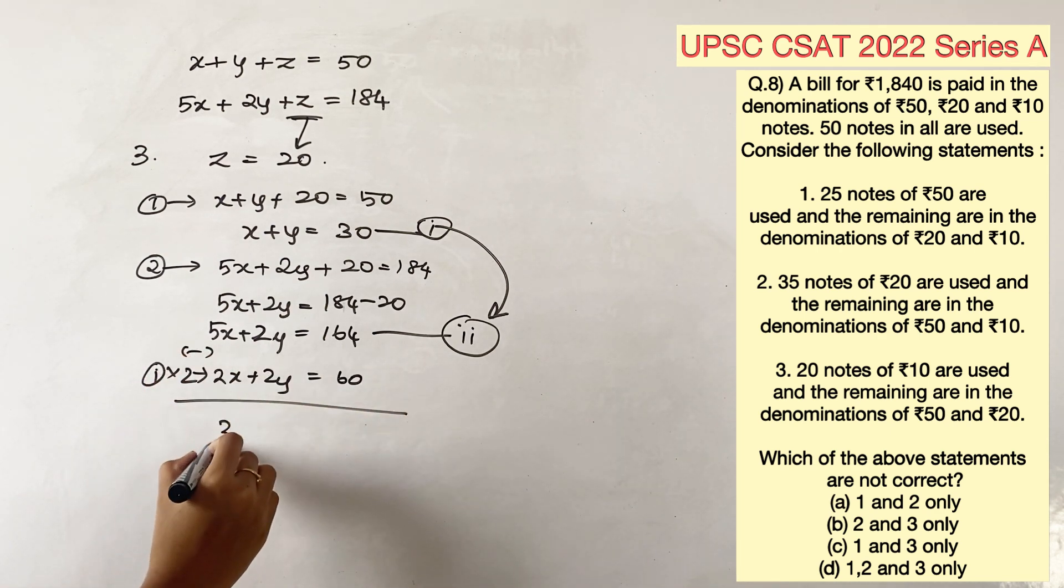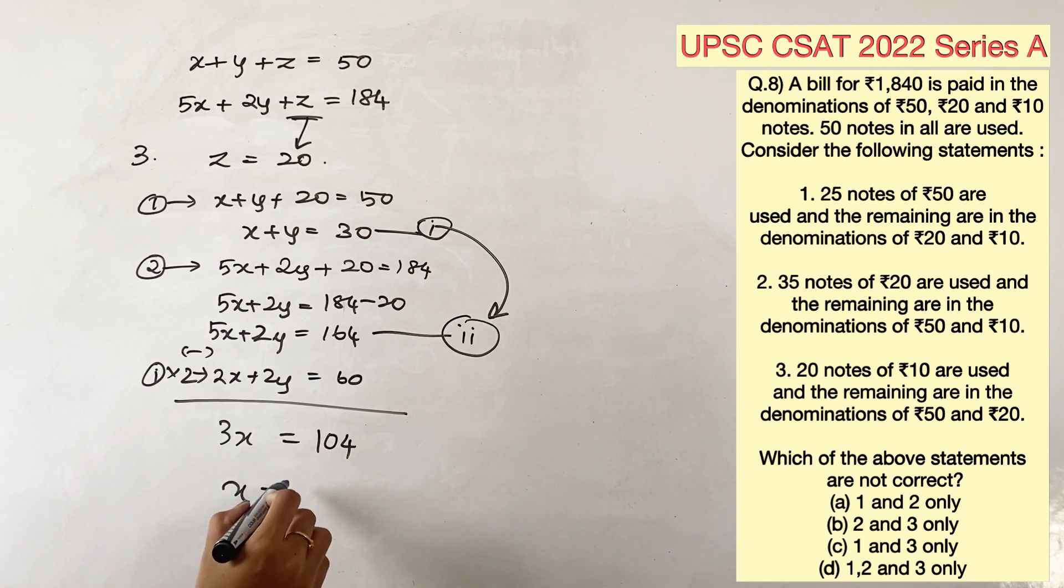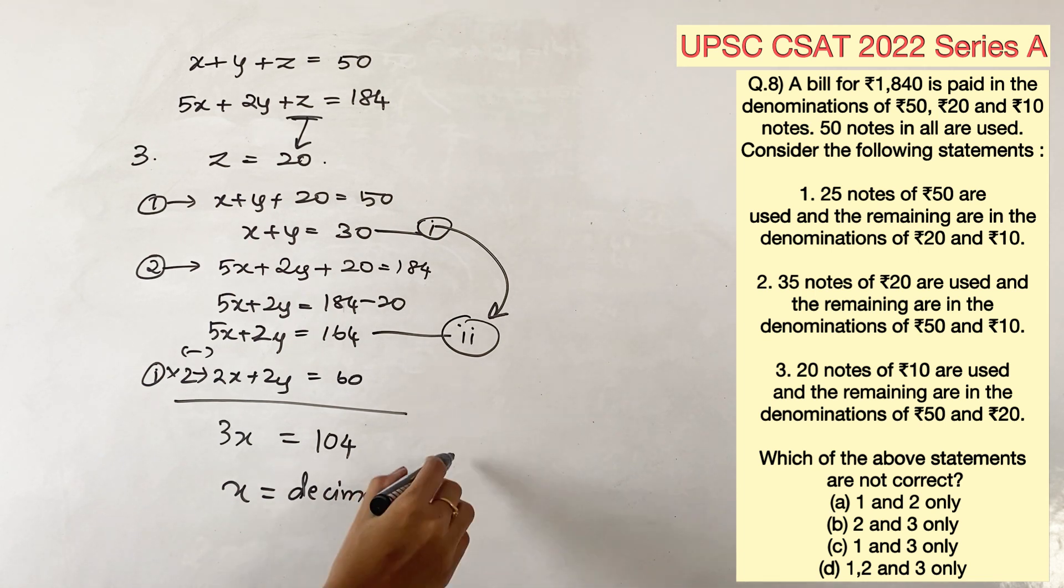Subtracting the second equation, we get 3x is equal to 164 minus 60, which is 104. x is again 104 by 3, which is a decimal value. So, we have to also eliminate the third option. Third option is also not possible.